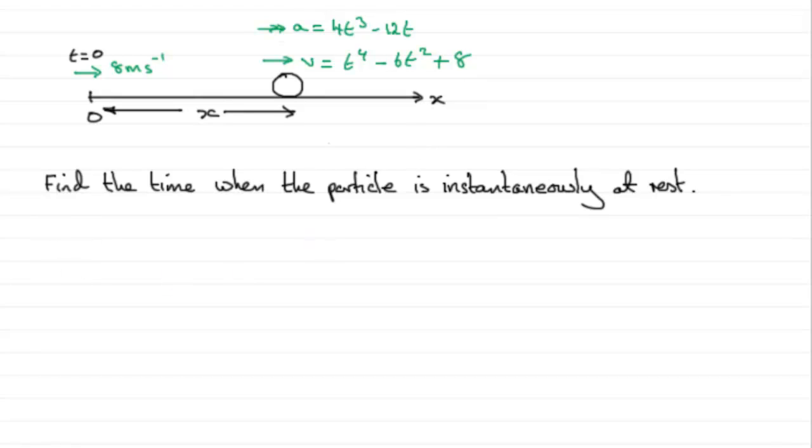So that's our starting point. When V equals 0, we know that 0 must equal t^4 minus 6t^2 plus 8. Now this is a quadratic equation in t^2, so I would have thought that it should factorize.